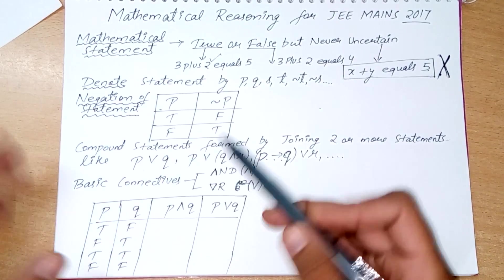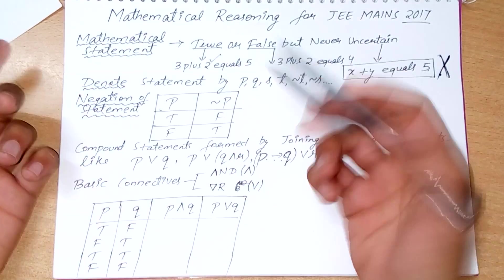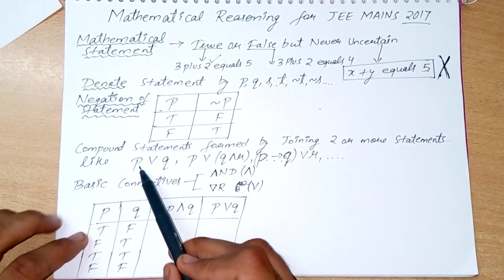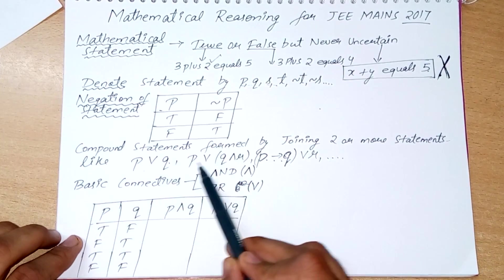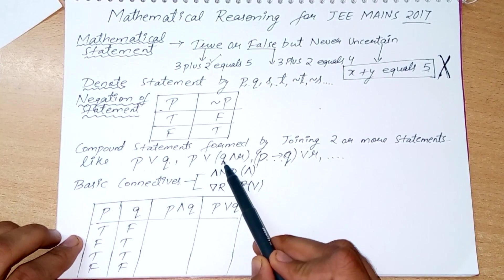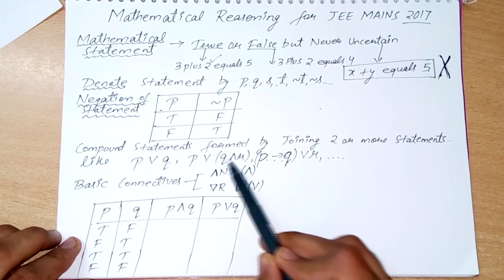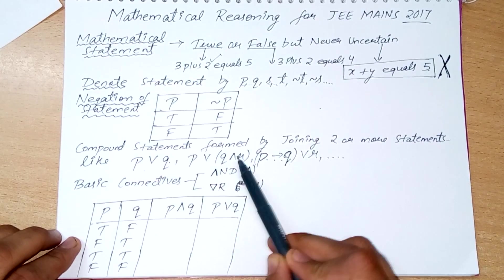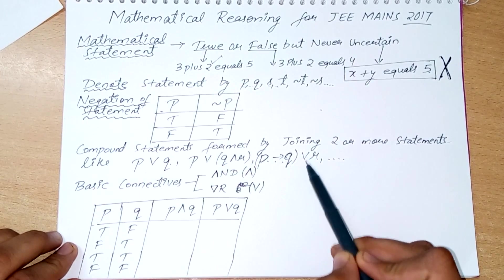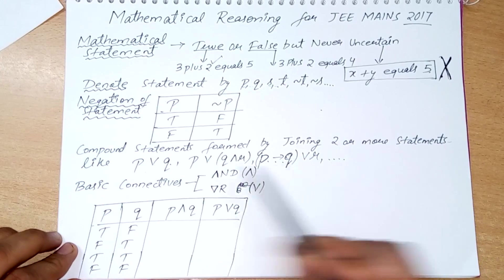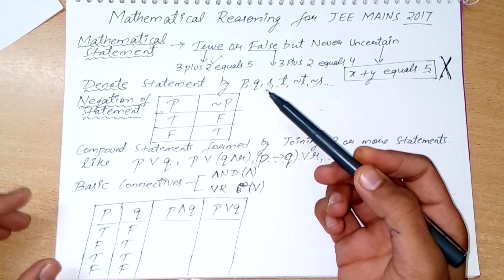A compound statement can be formed by joining two or more statements. For example, P or Q, P and Q, P implies Q or R — these are some examples of compound statements.